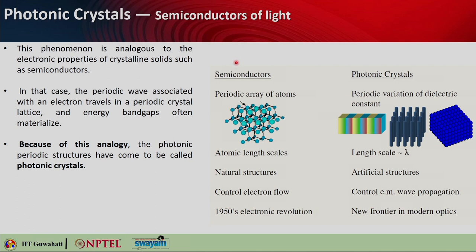Here is an exact analogy. Semiconductors are nothing but periodic arrays of atoms, with periodicity at the atomic length scale — these are natural structures, whereas photonic crystals are artificial structures. The length scale is comparable to the wavelength of incident light. In semiconductors you have periodic arrays of atoms; in photonic crystals you have a periodic variation of dielectric constant. This is 1D, this is 2D — with dielectric rods arranged as rod, air, rod, air — achieving a 2D photonic crystal. And this is a 3D photonic crystal. There are different ways of making 3D photonic crystals, which we will cover in the next lecture.